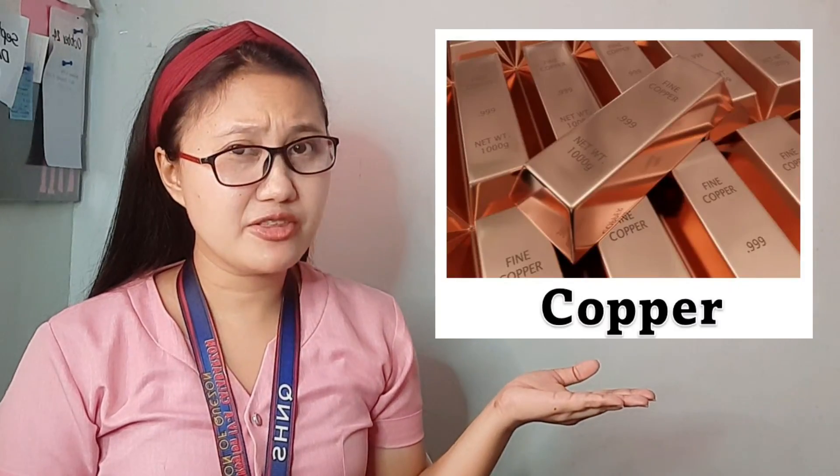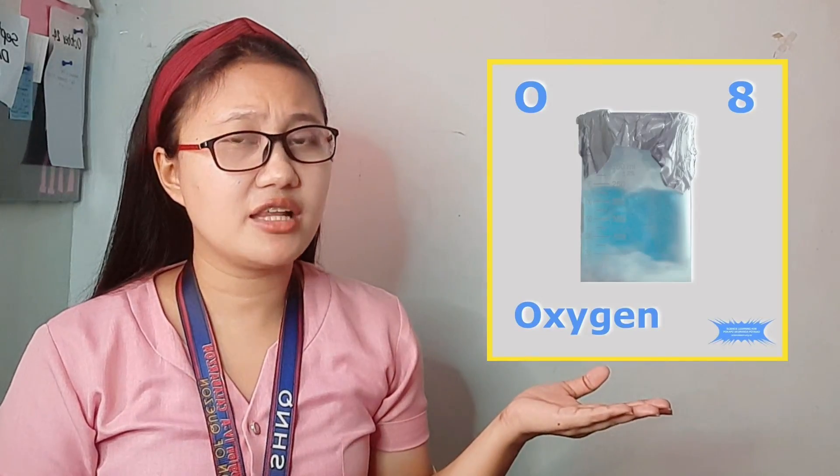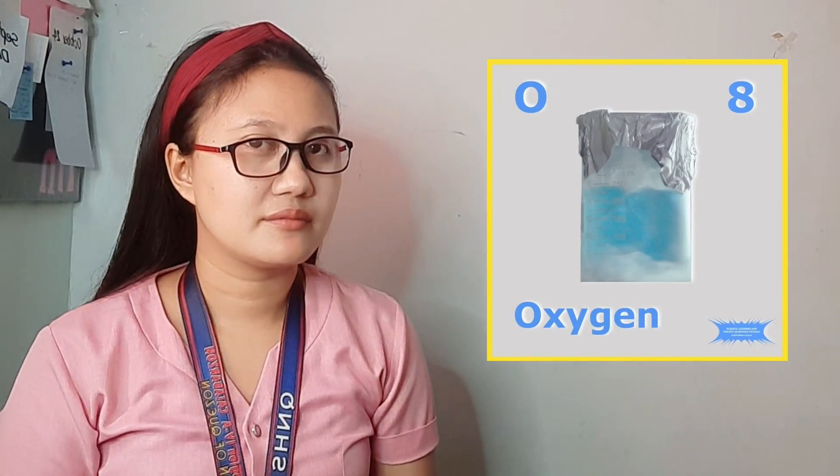Let's have a quick quiz. Tell me whether each of the following is an element or a compound. Number one: copper — element or compound? Next: oxygen — element or compound? Number three: carbon dioxide — element or compound? How about gold — element or compound? And last: water — element or compound? We'll answer these later.